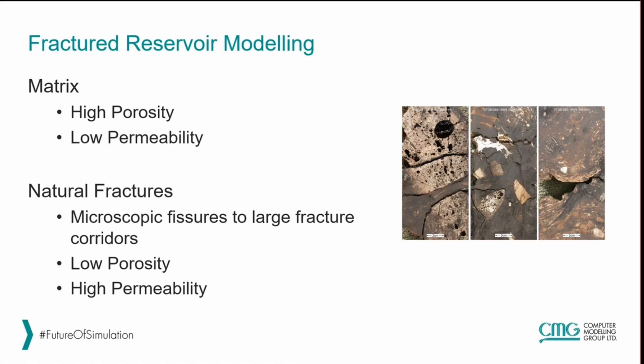With the natural fractures, these can be anything from microscopic fissures to large fracture corridors. When we're looking at faulted fluid flow, we're typically looking at more of these large fracture corridors. In comparison with the matrix, the fractures would have low porosity or a low pore volume and a relatively high permeability, which allows for quick fluid flow without a lot of accumulation in the fractures.